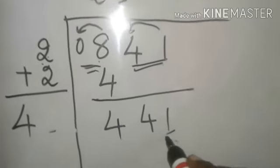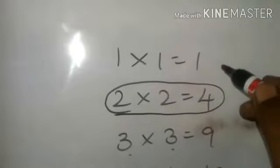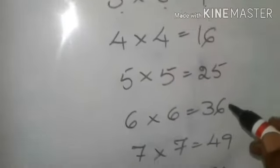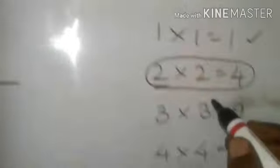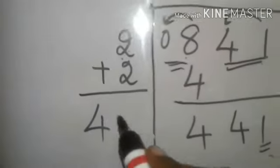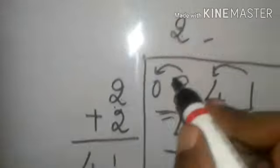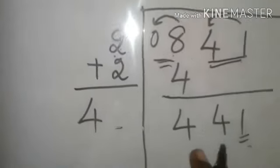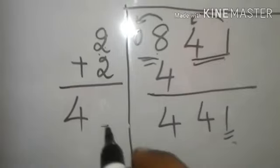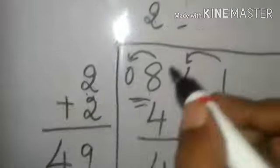So while multiplication, you should get 441. See the last number, it is one. So it should be either this or this 9. Nine into nine is 81 or one into one is 1. So if you are putting 1 here, it should be 1 here. So 1 into 41 is just 41. It's not 441. So if I put the next possibility 9 here, so that is 49 into 9. Let's check this.